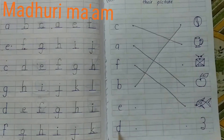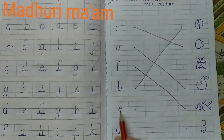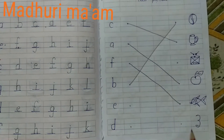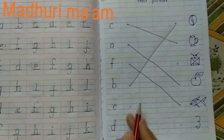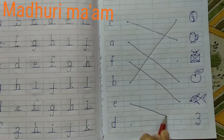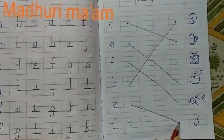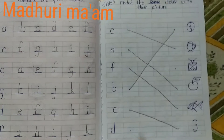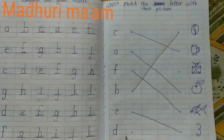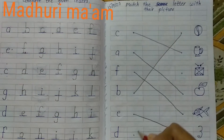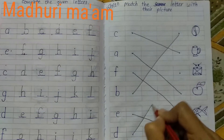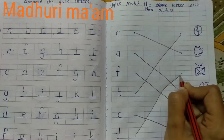Then the next letter is E. E for ear, so match with ear. Then which letter is this? This is D. So D for drum. Match with it.